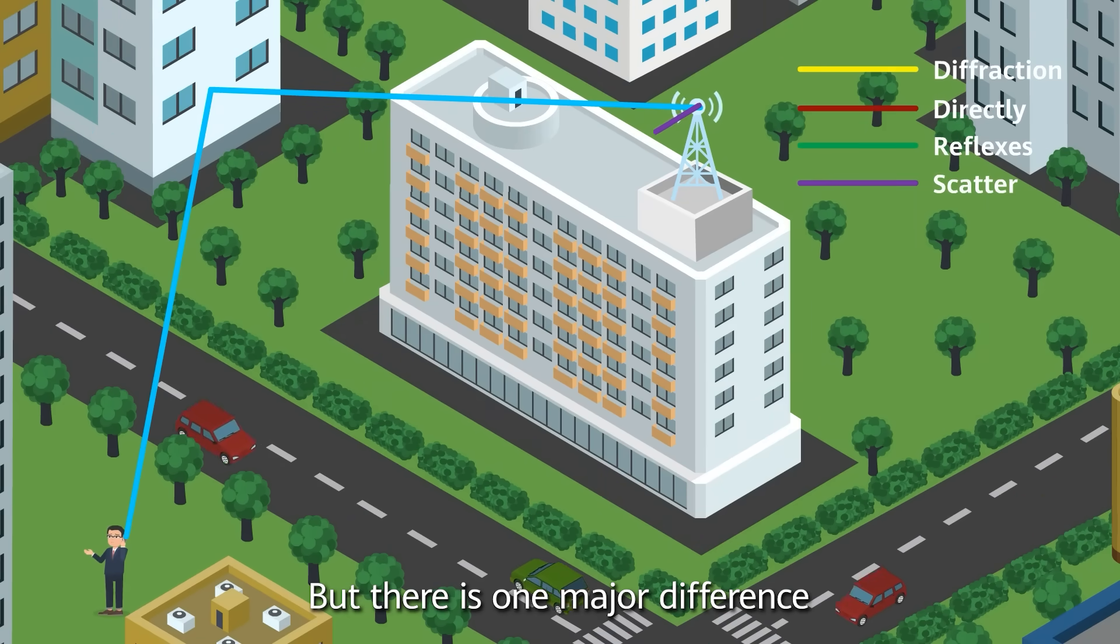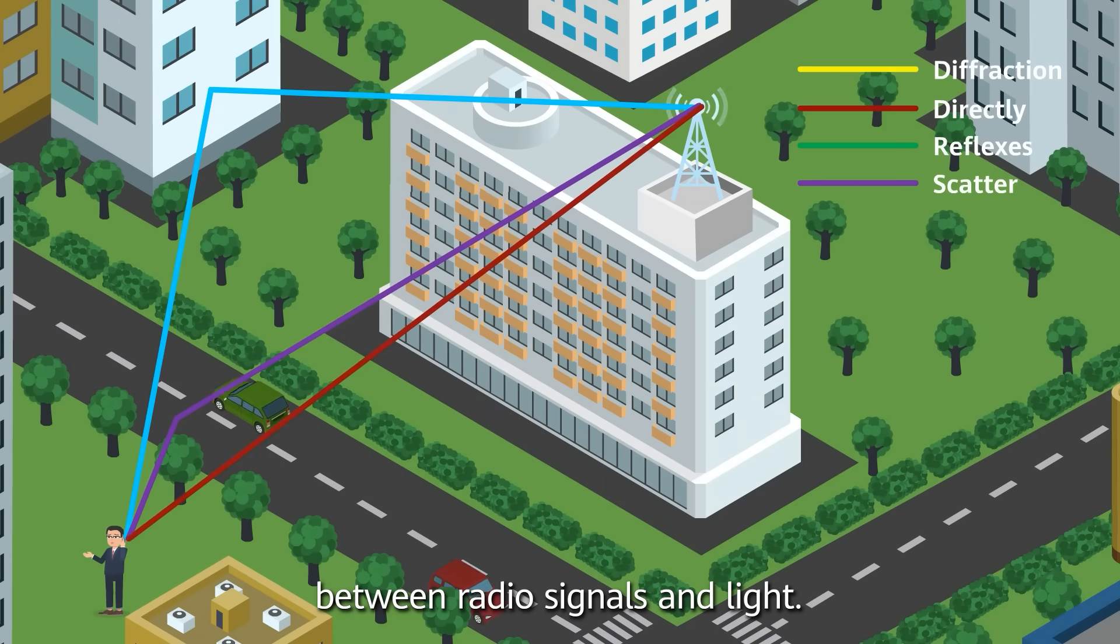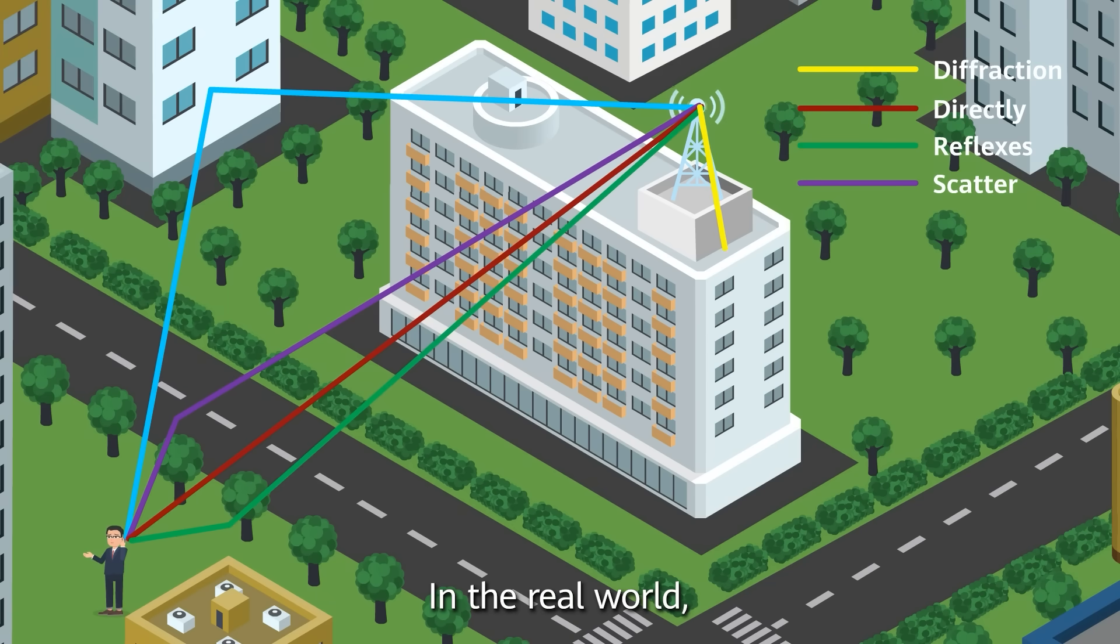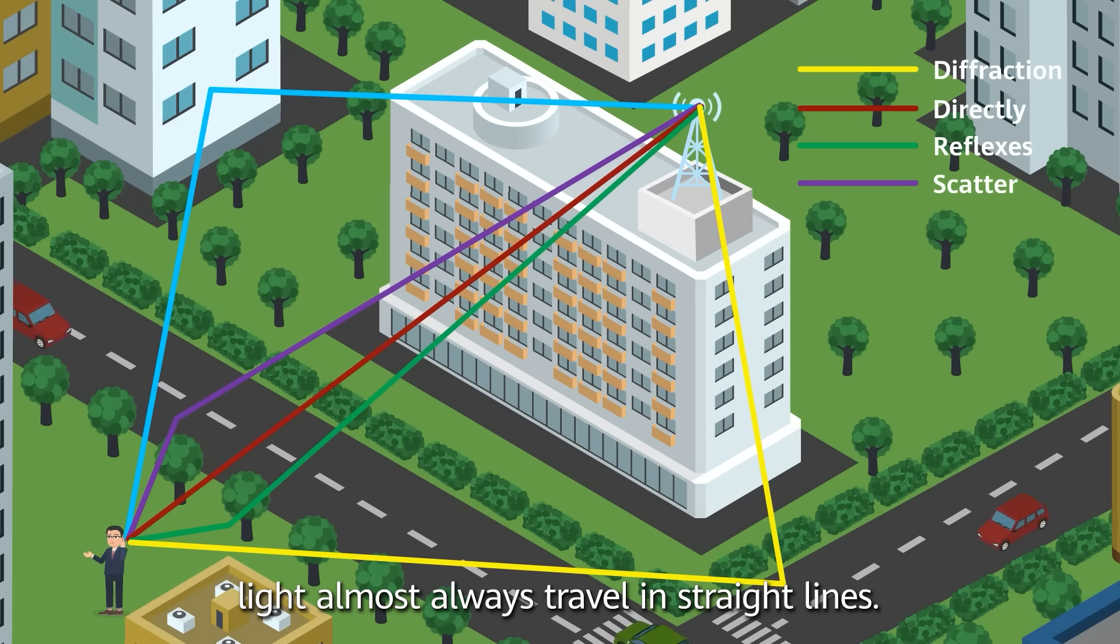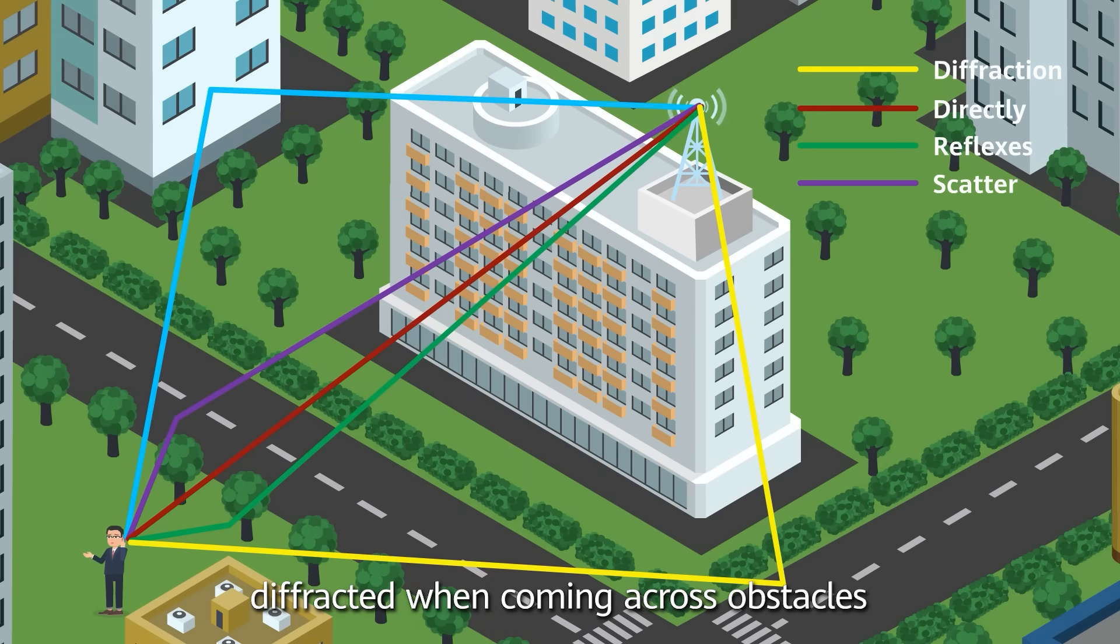But there is one major difference between radio signals and light. In the real world, light almost always travels in straight lines. Radio signals, however, tend to be reflected or diffracted when coming across obstacles like buildings or mountains.